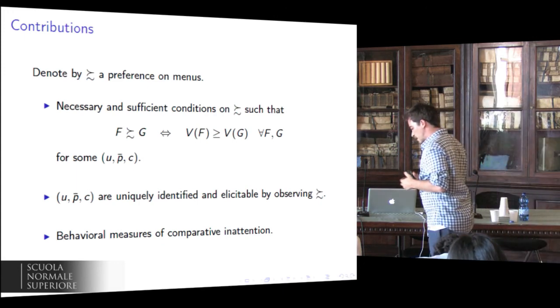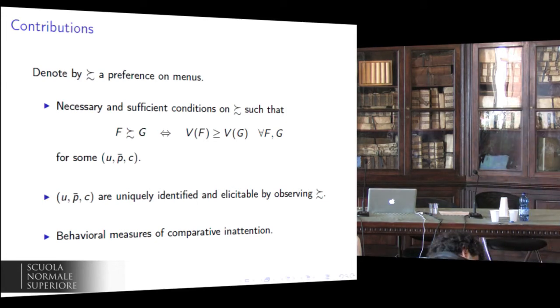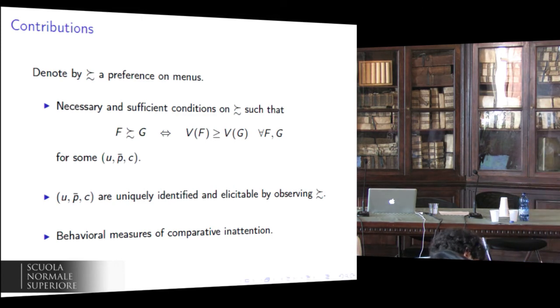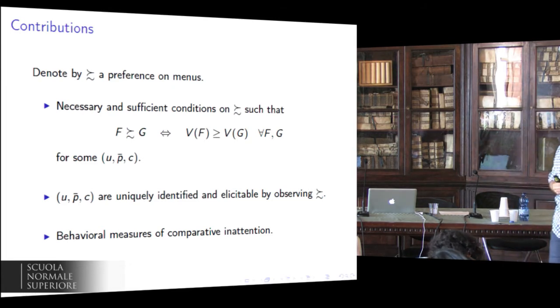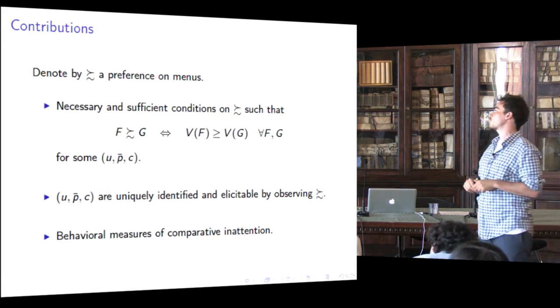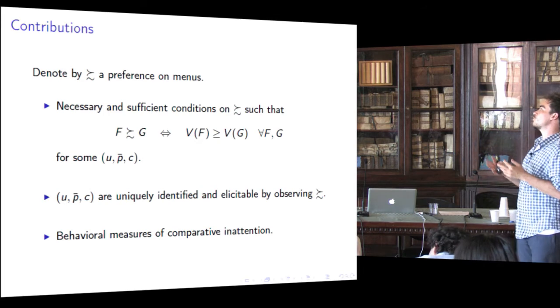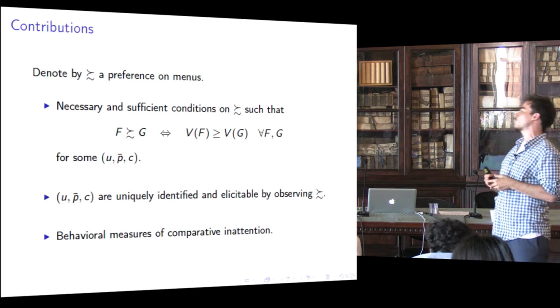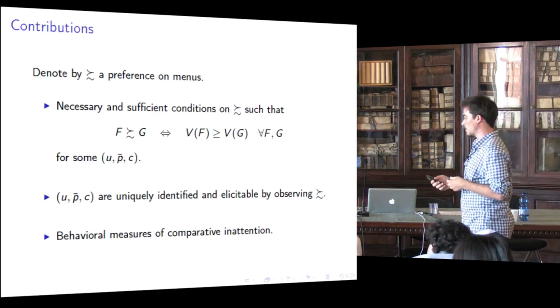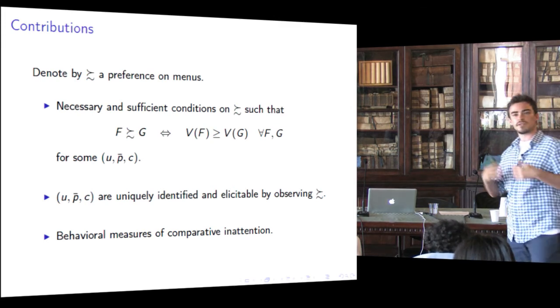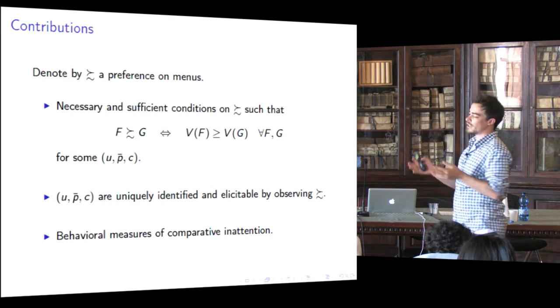We call rationally inattentive preferences the class of preferences satisfying these conditions, these axioms. In the paper, the axioms are motivated exactly by the idea that the decision maker is rationally inattentive. The idea that he faces an abundance of information which requires costly attention to select and process. Moreover, we show that the parameters are uniquely identified and elicitable by observing preferences. Finally, we characterize the behavioral measures of comparative inattention.